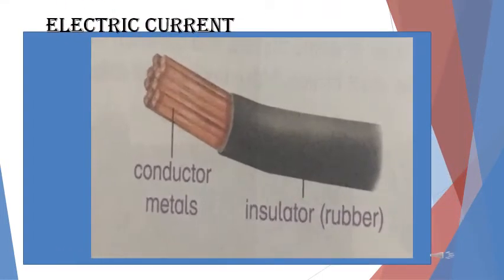Electricity is a form of energy. Electricity that moves along a wire is called an electric current. Electricity can be dangerous. Electricity is useful and we must not waste it. We use electricity to power light. The main electricity is produced in a power station.